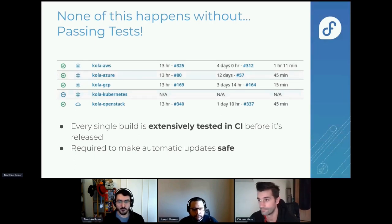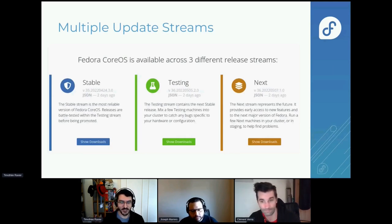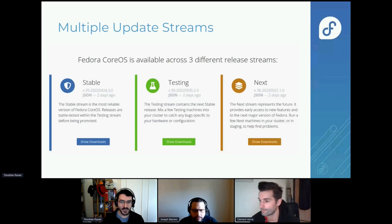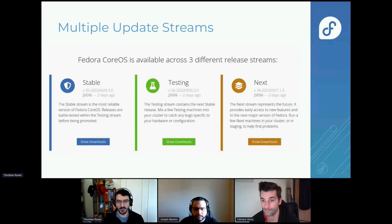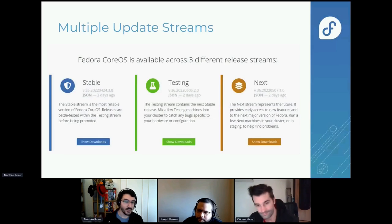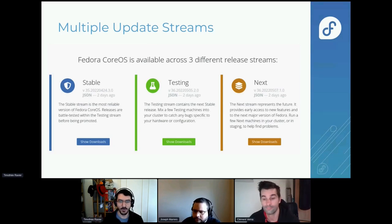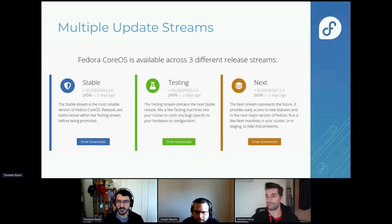Fedora CoreOS is different from classic Fedora in that it's RPM-based and updated using rpm-ostree. Instead of major releases, we have update streams: stable, testing, and next. They move along across Fedora major releases at their own pace. The stable stream is the most stable and tested one. Testing is a little ahead, taking fresh packages from Fedora with a small settling time, then two weeks later going into stable.